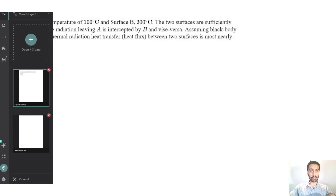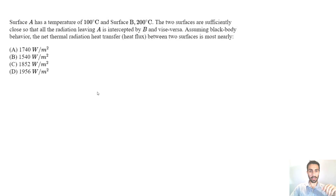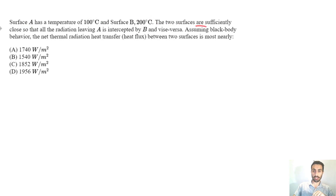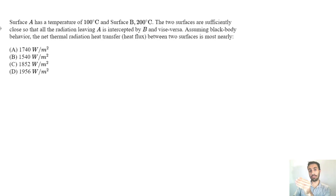For this FE-type question, we have a fairly simple example. Surface A has a temperature of 100°C and surface B is 200°C. The two surfaces are sufficiently close so that all radiation leaving A is intercepted by B, and vice versa — all radiation from B is intercepted by A.